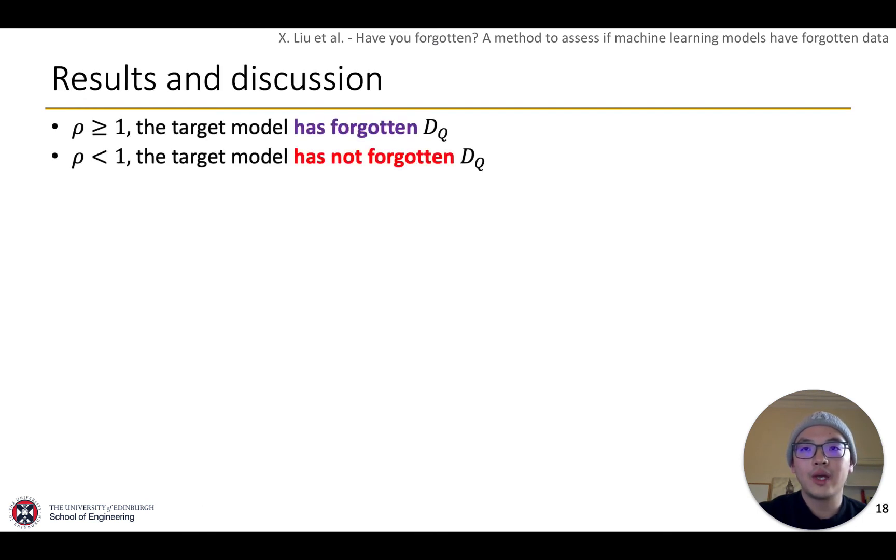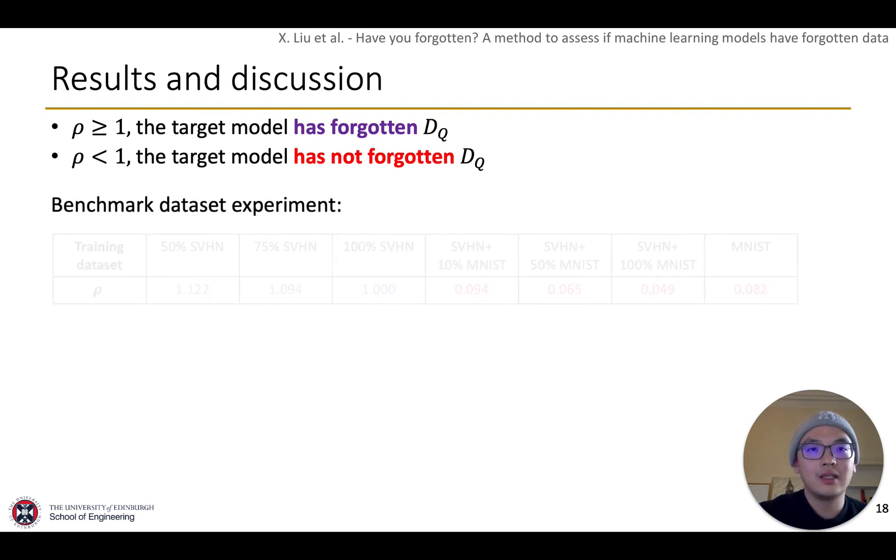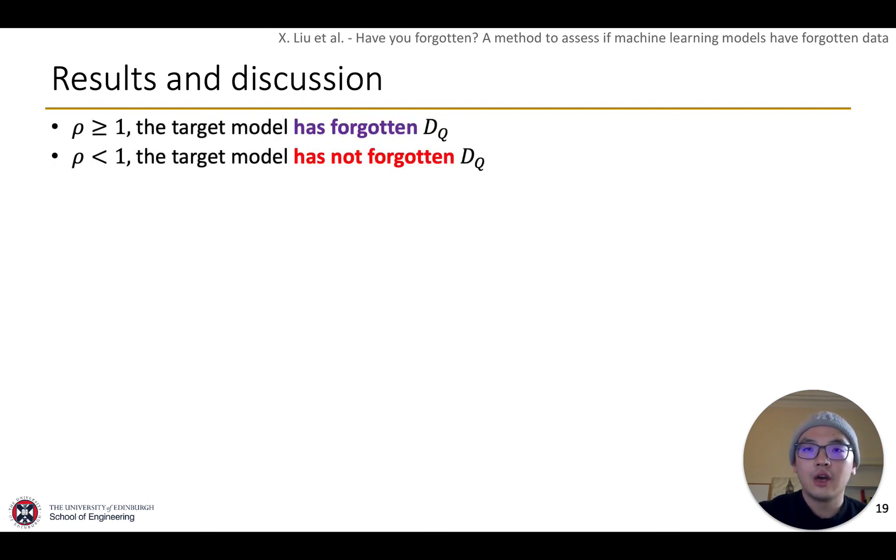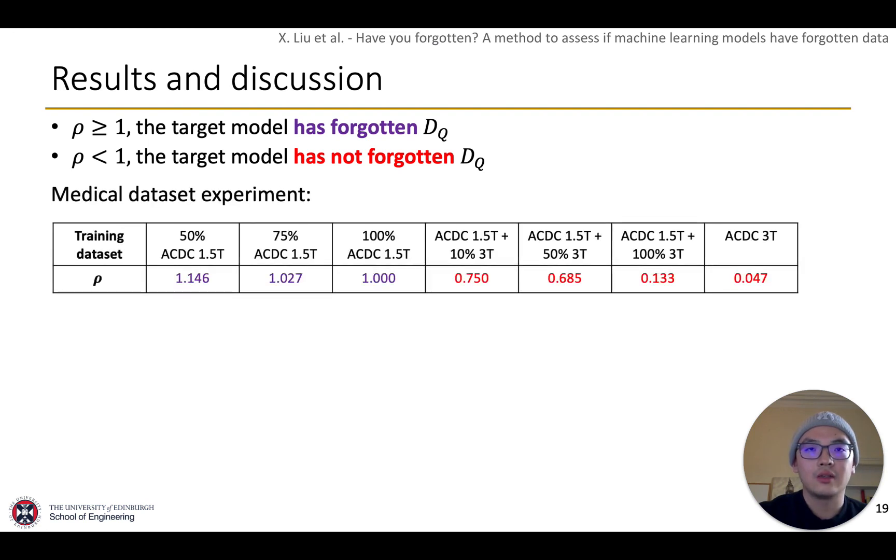Recall that we can use the value of rho to detect if the target model has forgotten query dataset. For benchmark dataset experiment, our method correctly detected each case, for example, when only 10% samples of query dataset are in the training data. The ratio is apparently much smaller than 1, hence we can tell the target model has not forgotten the query dataset. Similar results are obtained in the medical dataset experiment. Both the two experiments' results support the effectiveness of our method.